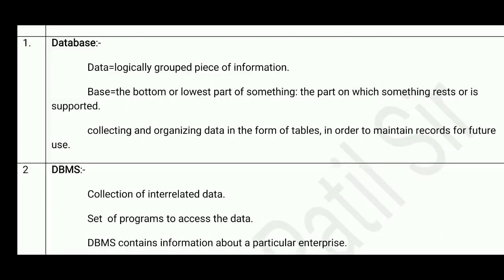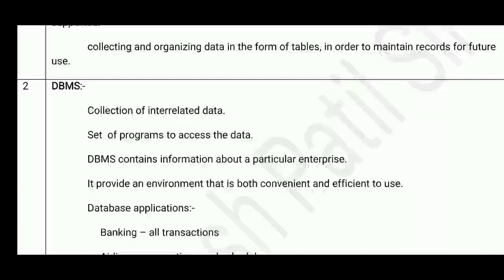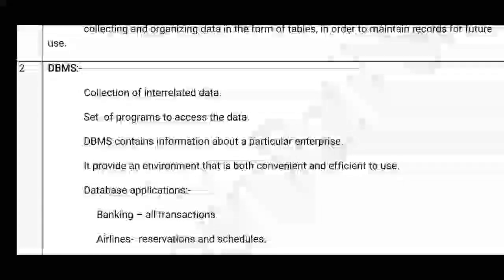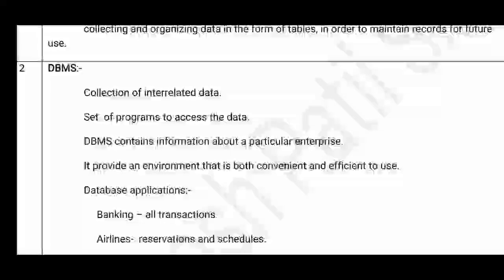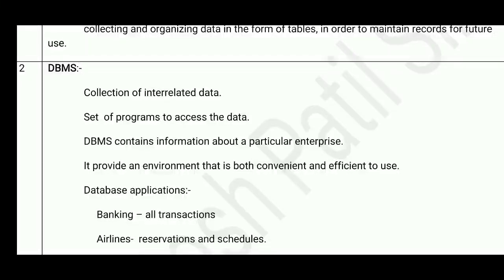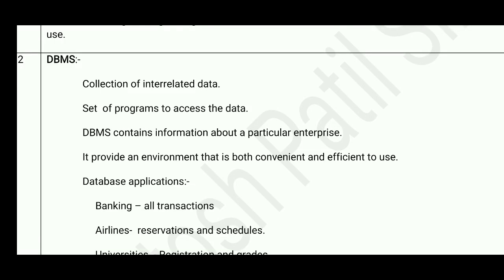Next is DBMS, which means Database Management System. It is collecting, organizing, and managing data using a system or software. DBMS is a collection of interrelated data — it connects interconnected data in the form of tables — and a set of programs to access the data in various formats. DBMS contains information about a particular enterprise. For example, in case of our school, that database contains only information about our school, not related to any other organization.